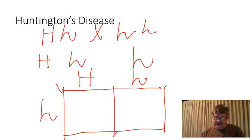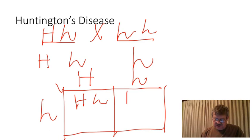What is the probability of a child from this couple — where one parent had Huntington's disease and the other was free of it — having Huntington's disease? This child would have Huntington's disease, and this one would not. So the probability of a child having Huntington's disease would be 50%.